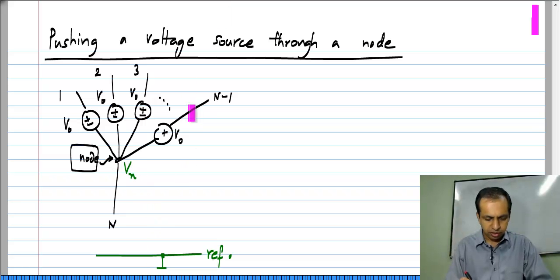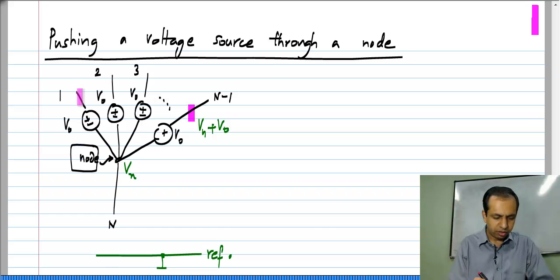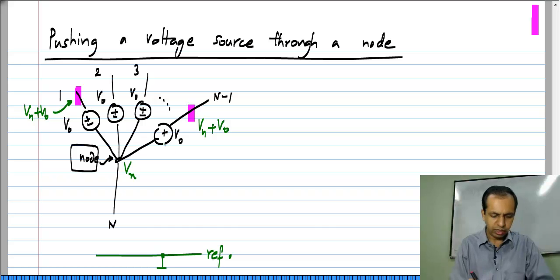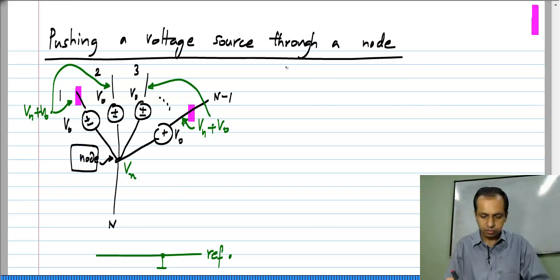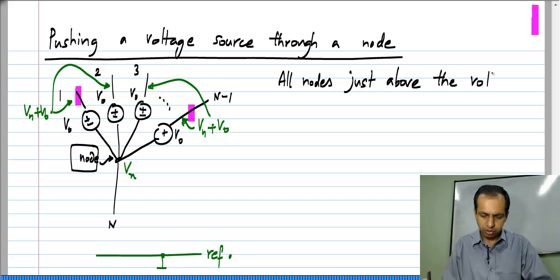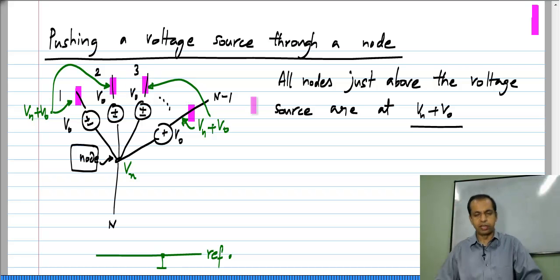The voltage between this node and the reference node is Vₙ. By a simple application of Kirchhoff's voltage law, the voltage at the node above the first voltage source is Vₙ plus V₀. Similarly, the voltages at all these points after each voltage source are exactly the same and equal to Vₙ plus V₀. So all nodes just above the voltage sources are at Vₙ plus V₀, meaning all these nodes are at exactly the same voltage.